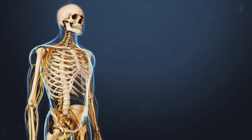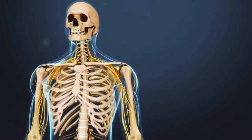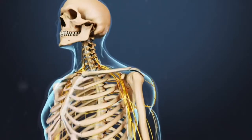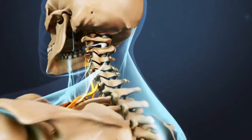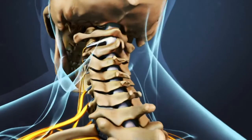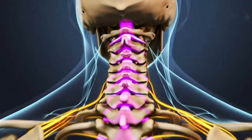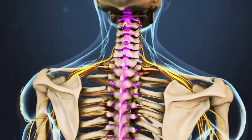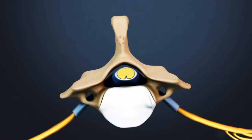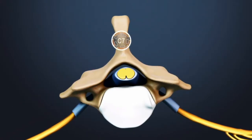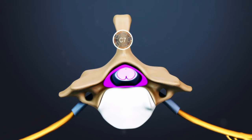Cervical spinal stenosis with myelopathy is diagnosed when degenerative changes in the cervical spine cause spinal cord compression. The spinal cord is a nerve bundle that runs from the base of the brain to the low back. In a normal spine, there is ample space for the spinal cord in the spinal canal.